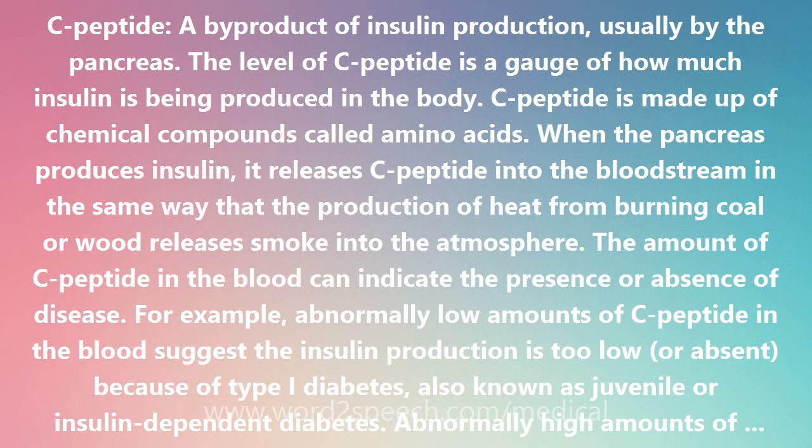Football players, mountain climbers, and lumberjacks all thrive on the energy glucose provides. Insulin also prevents glucose overload in the bloodstream by lowering the level of blood glucose as necessary. Insulin is released by cells in the pancreas called the islets of Langerhans.